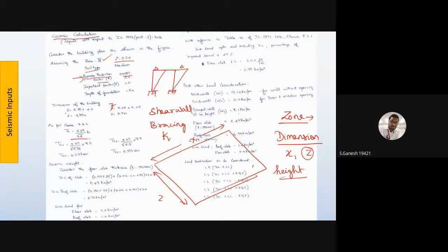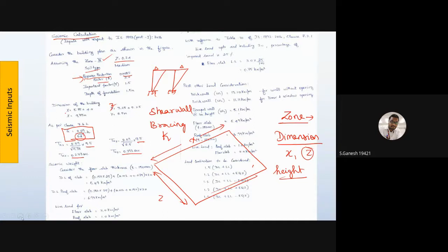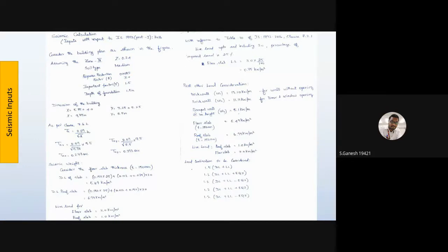The acceleration time Ta is calculated with and without brick infills. The dimension D used is the plan dimension in X or Z direction. We calculate Ta with respect to the total height of the building, and these values along with previously calculated dead loads are then incorporated into the STAAD.Pro model.